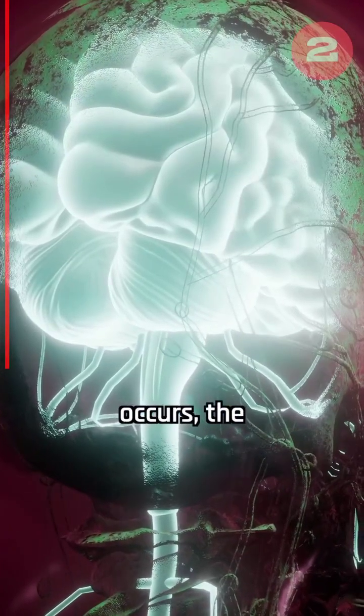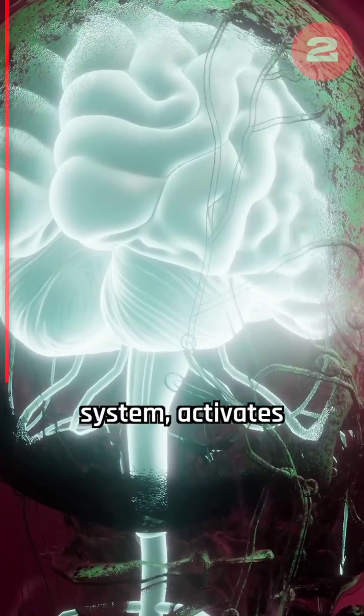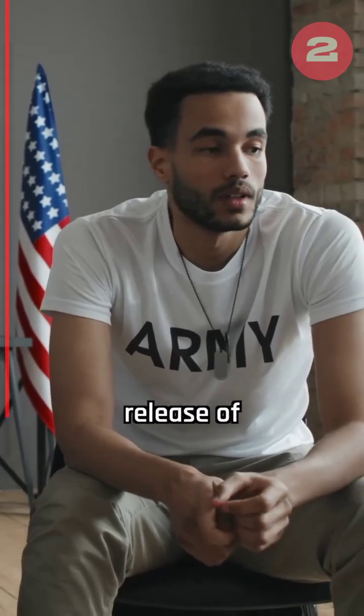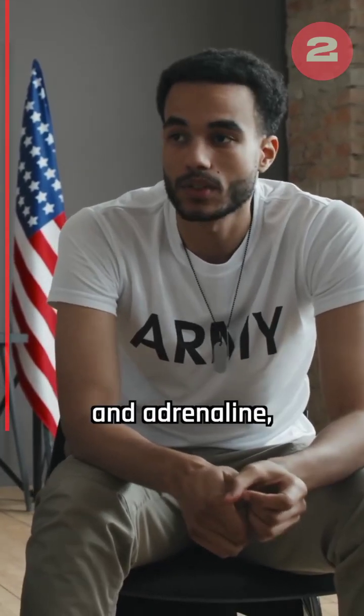When a traumatic event occurs, the amygdala, the brain's alarm system, activates the fight-or-flight response, signaling danger. This leads to the release of stress hormones like cortisol and adrenaline, heightening alertness and response.